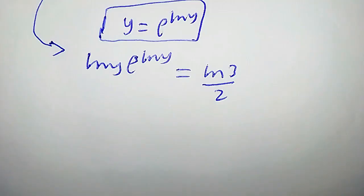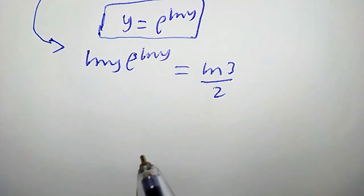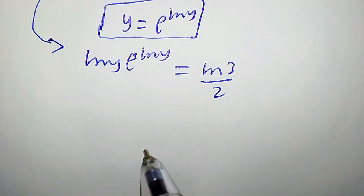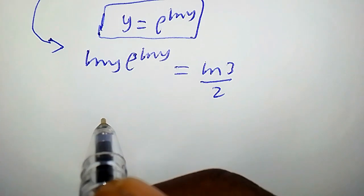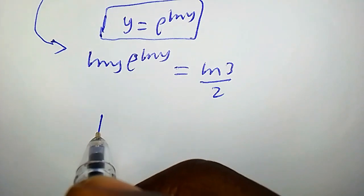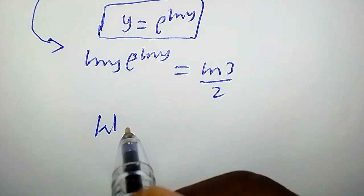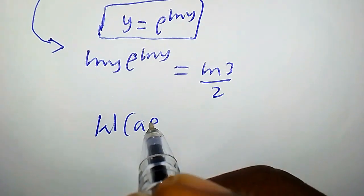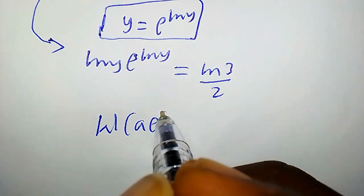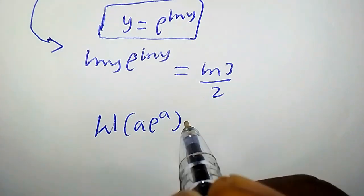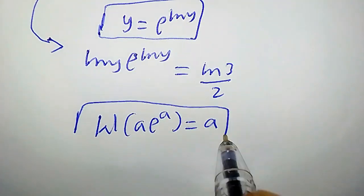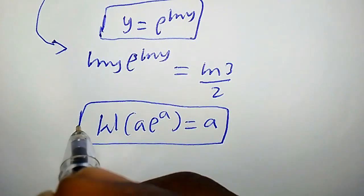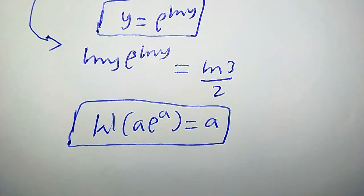Now we recall the Lambert W function formula. It states that W(a · e^a) equals a. This property is called the Lambert W function formula.